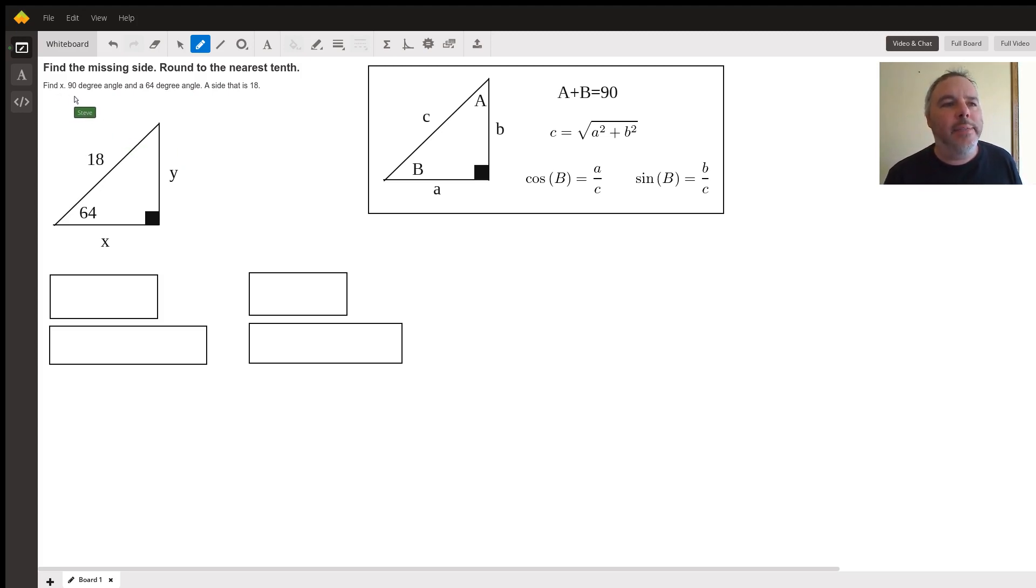So it says find X, 90 degree angle and a 64 degree angle and a side is 18.